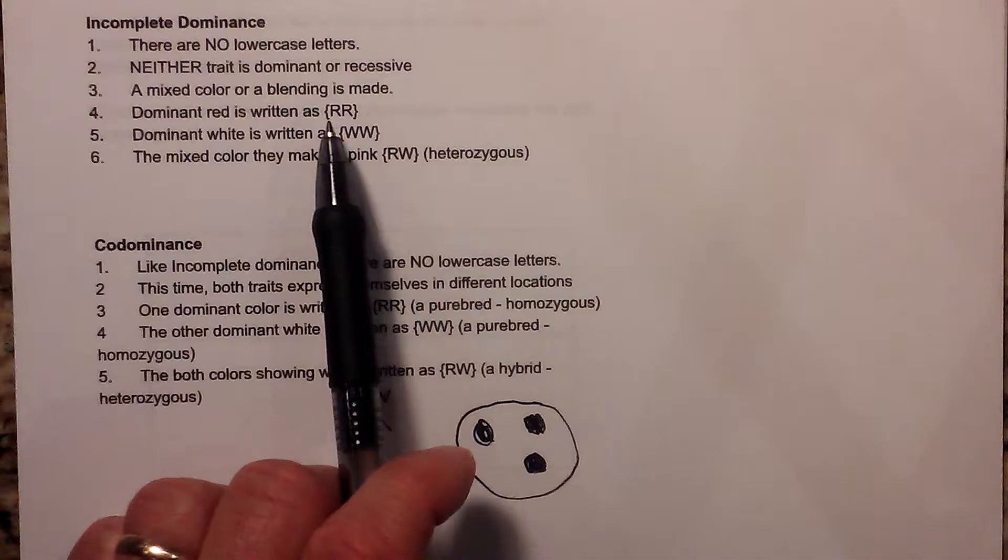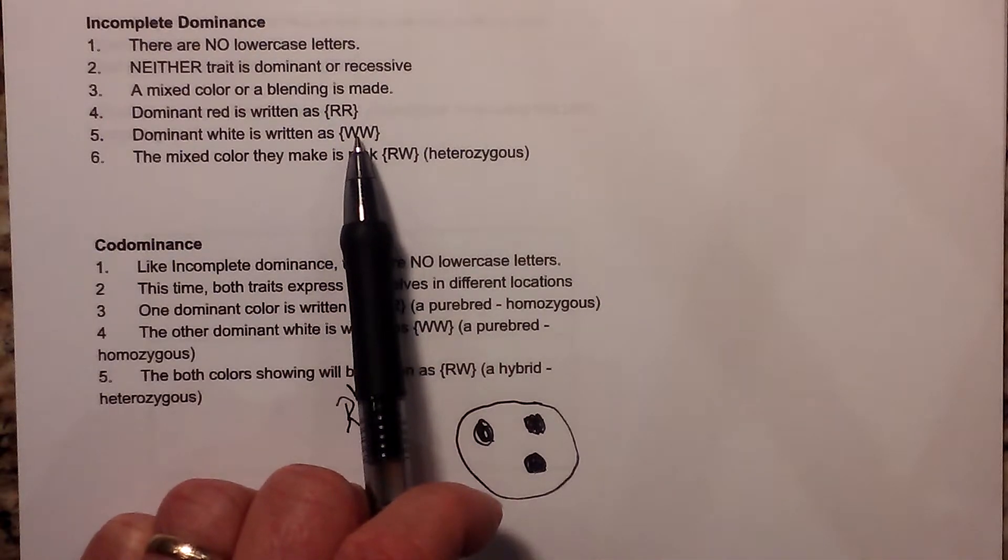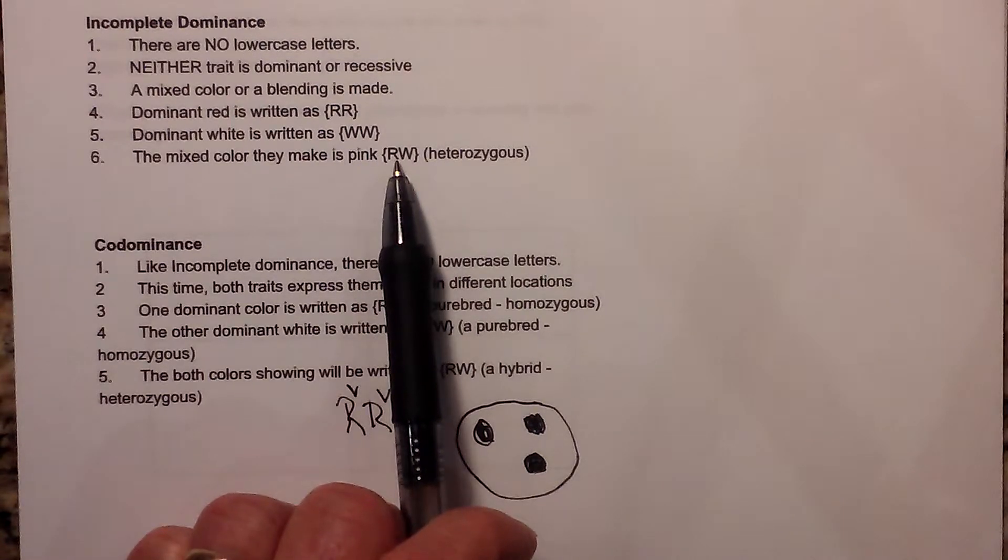Dominant red would be written as capital R capital R, and dominant white would be capital W capital W, and the mixed or pink would be RW.